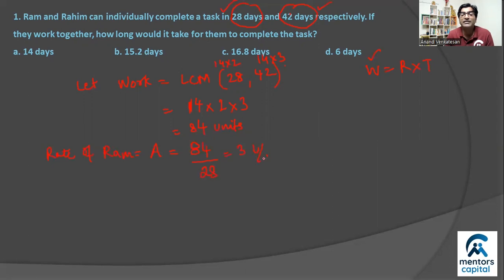So this will be 3 units every day. And similarly, rate of Rahim, let's call that B, should be equal to 84 divided by 42. So this will be 2 units per day. So both of the individual rates I have got.